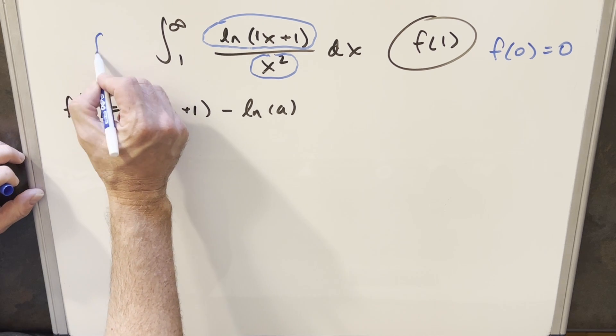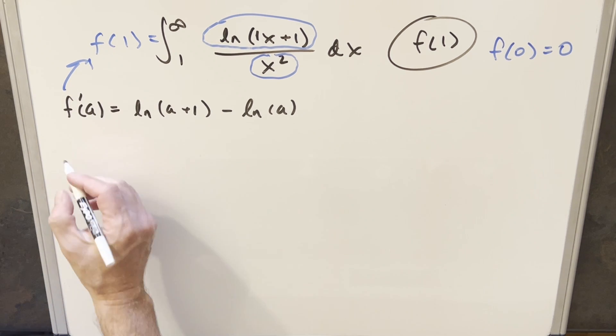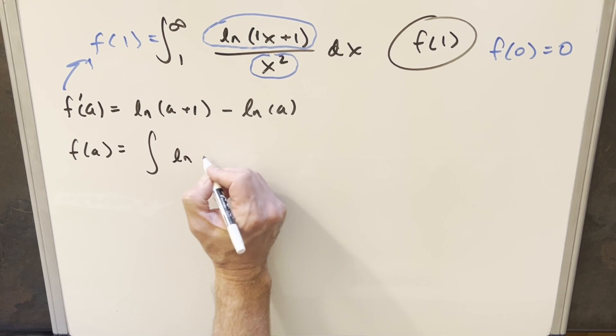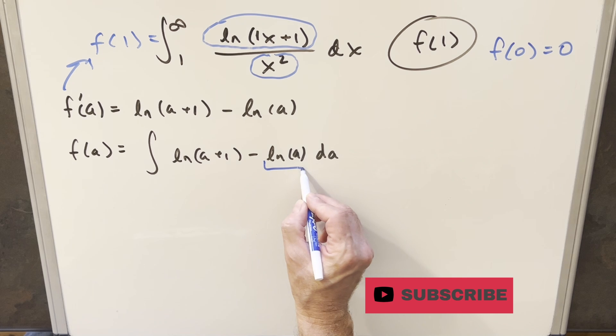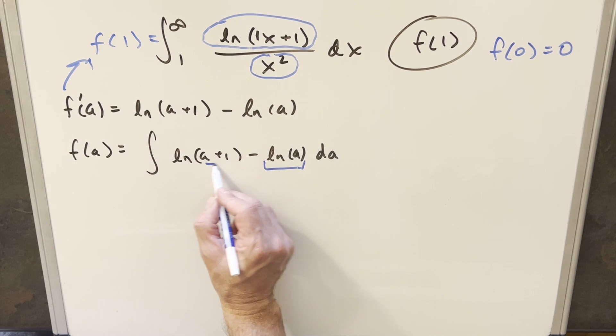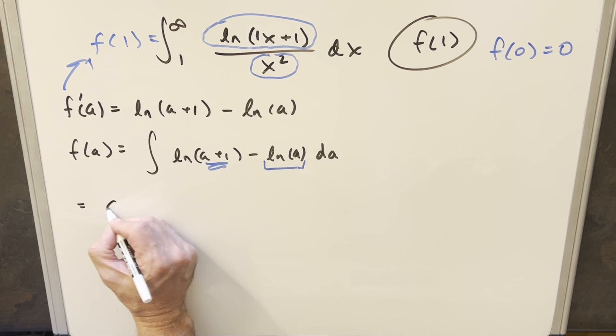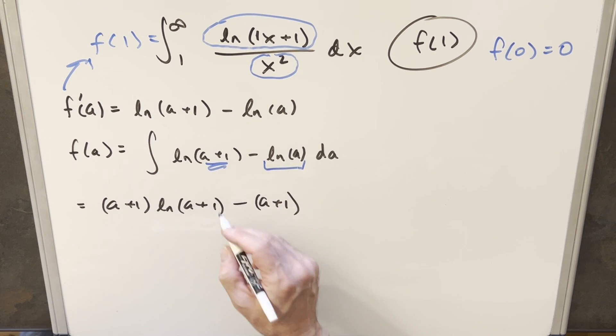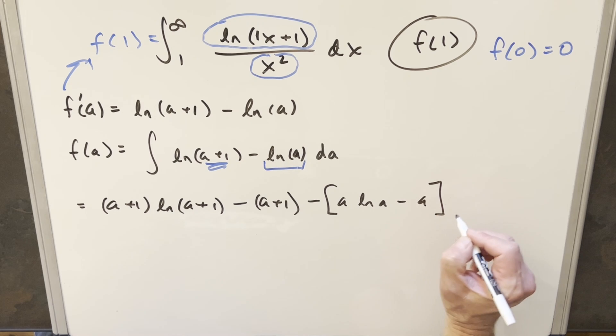Then now that we have our f prime of a value, we want to get back to f of a. Our goal is f of 1. So we can just integrate this with respect to a. On the left side, this is just going to become f of a. And then over here, we're going to have an integral of this stuff with respect to a. I can just use the formula on each of these, our integral of ln x formula. So for this first part, we're going to have a plus 1 natural log a plus 1 minus a plus 1. And then we have the same formula on this piece. So this is going to be a ln a minus a, and then we have a plus c on the end.